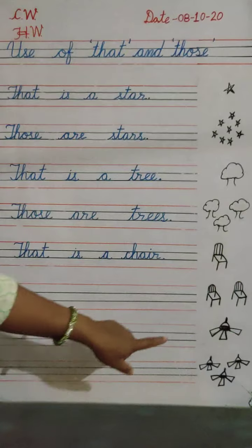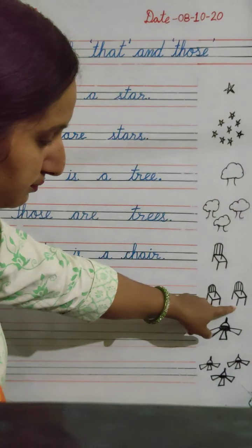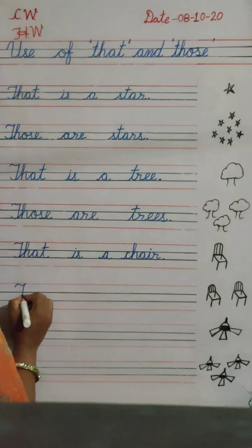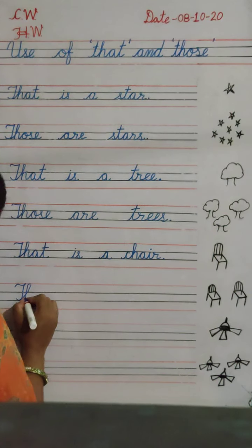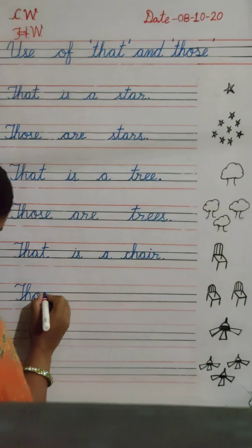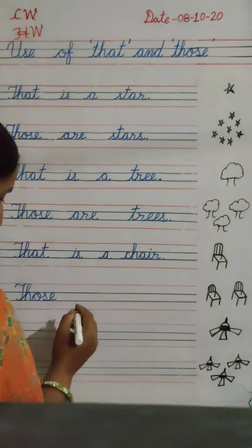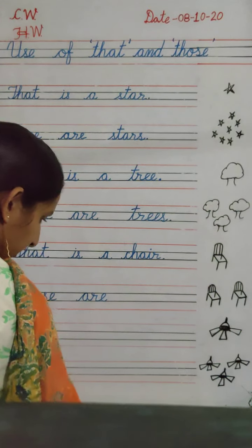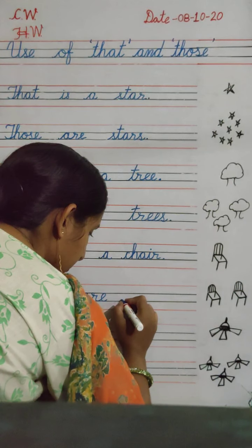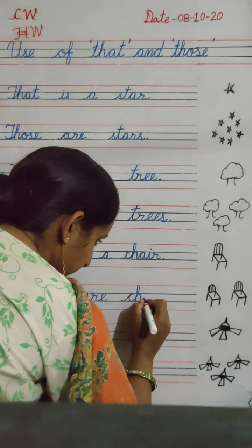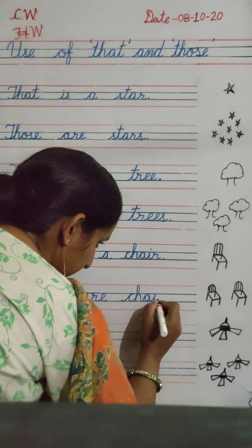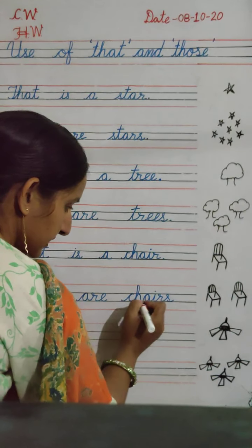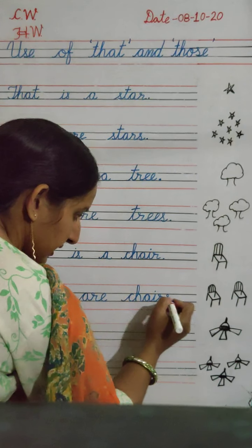Now, next picture. Look there — there are many chairs. So we will write 'those'. Those are chairs. C-H-A-I-R-S — chairs. We will add S because there are many chairs. Full stop.